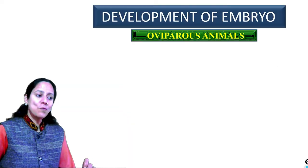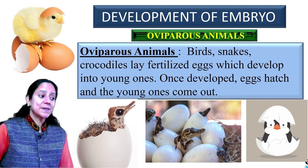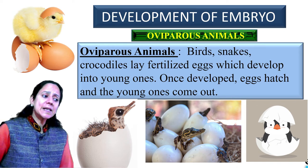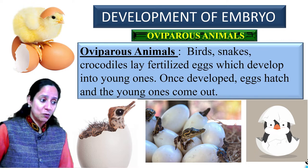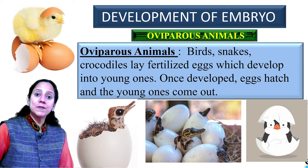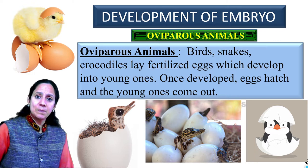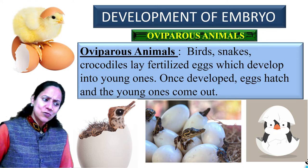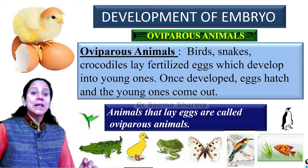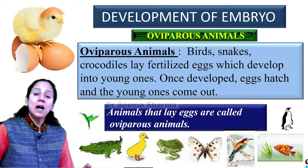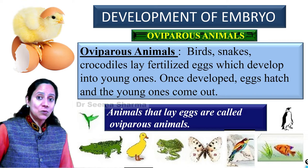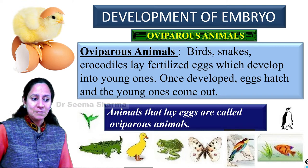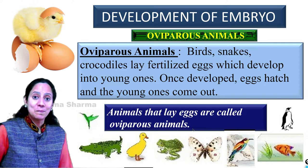Now let's learn about oviparous animals. Oviparous animals — birds, snakes, and crocodiles — lay fertilized eggs, which develop into young ones within those eggs. Once development is complete, the egg hatches and the young one comes out. All those animals that lay eggs from which young ones hatch are called oviparous animals, and there is a long list of oviparous animals.